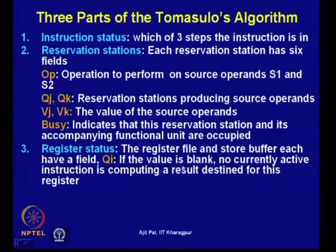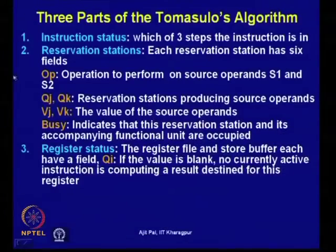The Busy bit Vj indicates that the reservation station and its accompanying functional unit are occupied — this helps detect structural hazards. The third part is register status: the register file and store buffer each have a field Qi. If the field is blank, no currently active instruction is computing a result destined for that register.